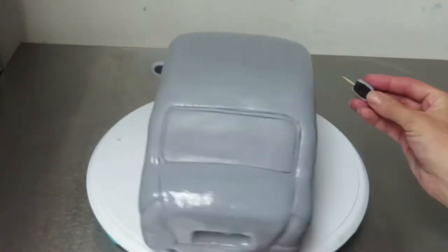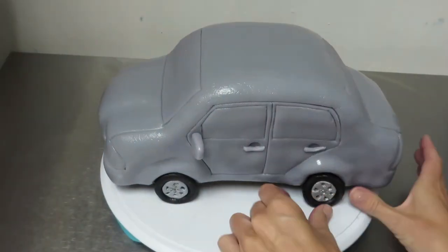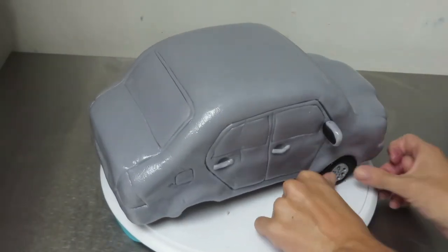I'm attaching the side mirrors with toothpicks and painting the pearl shimmer on them as well. Now for the wheels. I've painted a bit of water where they're going to go so they stick nicely.